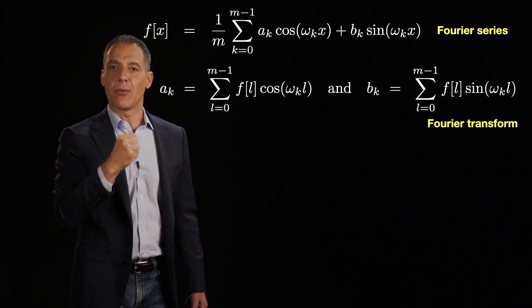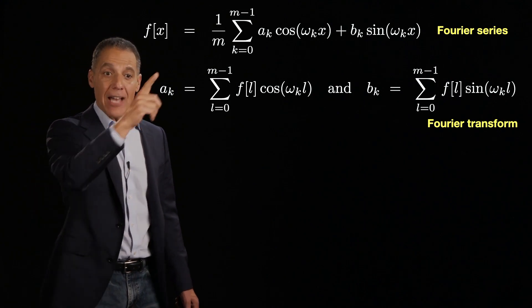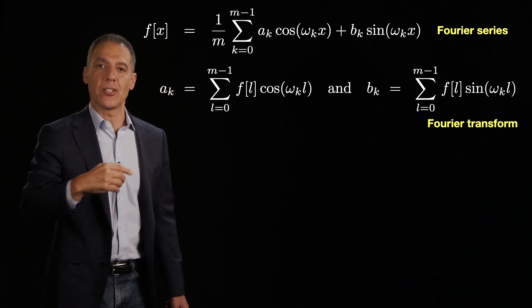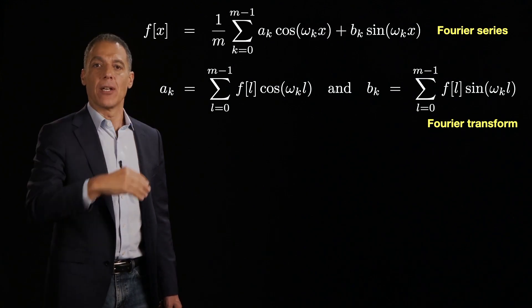It makes a statement about the representation, but it doesn't tell you how to represent it. It doesn't tell you what a_k and b_k are. It just says you can do this.